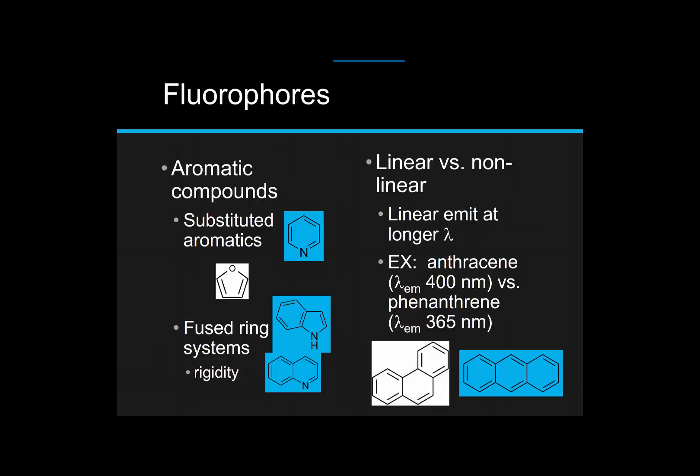As you make the pi, pi star system bigger, as the size extends, then the pi, pi star transition moves to longer wavelengths, and concomitantly, the emission wavelength will also shift to longer wavelengths. Geometry can play a role in this conjugation effect, and it does. Linear systems tend to be shifted to longer wavelengths compared to nonlinear systems. So I've given you the structure of anthracene, which emits at 400 nanometers, and you can compare that to phenanthrene, which is nonlinear, and it emits at 365 nanometers.